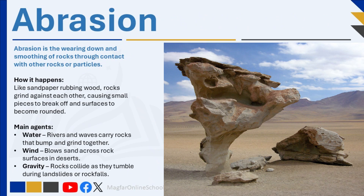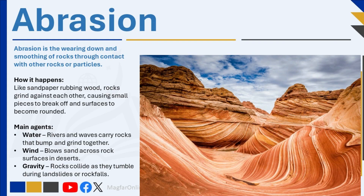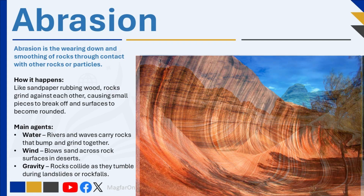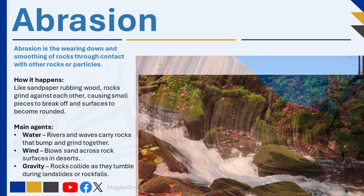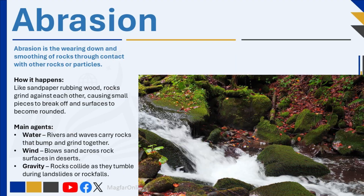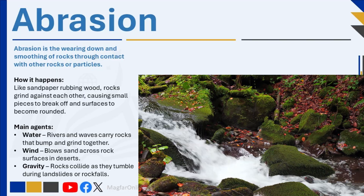Abrasion is a key type of physical weathering that occurs when rocks are broken down through direct contact with other rocks or particles, usually as rocks are moved by natural forces. The process is similar to how sandpaper smooths wood — over time, friction between rock surfaces causes small fragments to be chipped away, resulting in smoother and more rounded rocks. There are three main natural forces that drive abrasion: moving water, wind, and gravity. Moving water such as rivers, waves, or rain carries rocks, sand, and pebbles that collide with one another and the riverbed, causing a grinding effect.